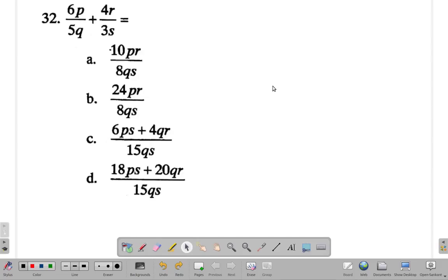Question 32. 6p divided by 5q plus 4r divided by 3s is? What is it equal to? This is all about adding two fractions.